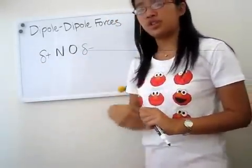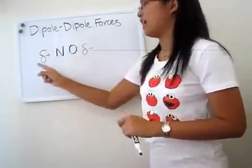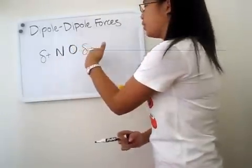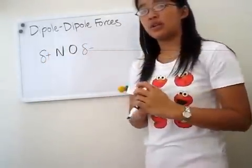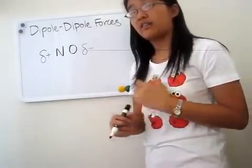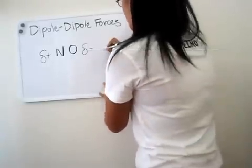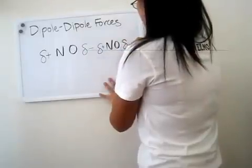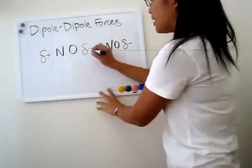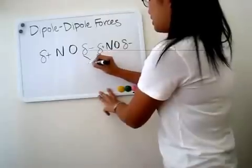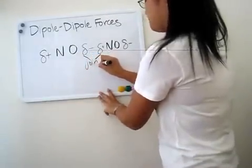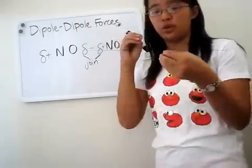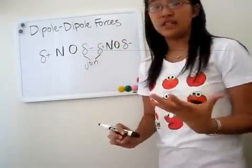These two symbols show that this side is more negative and this side is more positive. It's almost like you have a magnet — a negative and a positive side — so the negative is going to attract the positive side of another atom or molecule. So for NO, this side is positive and this side is slightly negative, and the positive and negative charges are going to join together. Like a magnet, those two NO molecules are going to be attracted to each other because of the difference in charges.